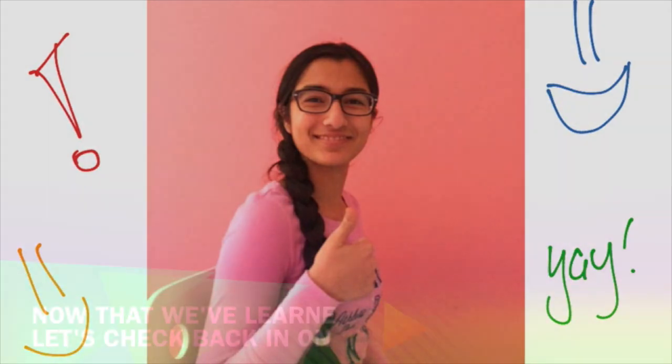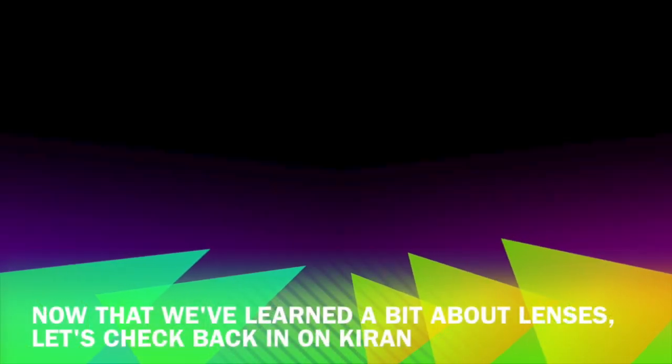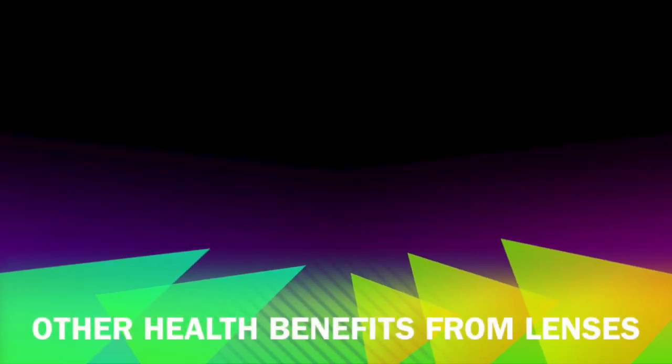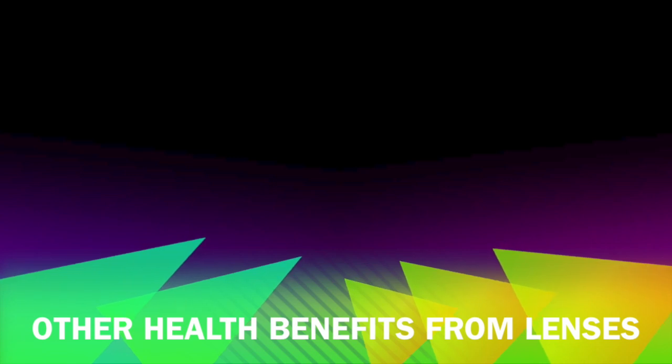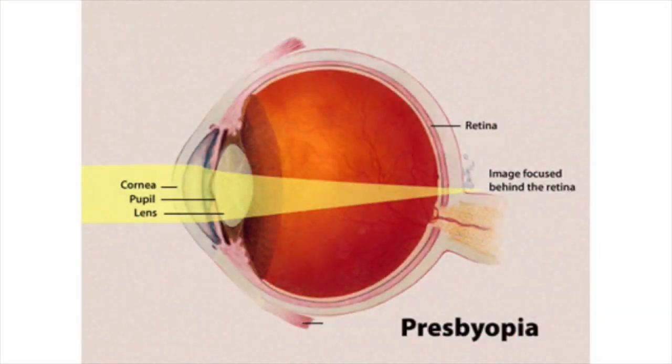All in all, corrective lenses are a wonderful application of optics to aid in human vision, and in general the benefits outweigh the cons as correct vision is necessary to live a normal life. Now that we know how lenses fix health problems such as myopia and hyperopia, I will discuss other health issues that lenses help solve.